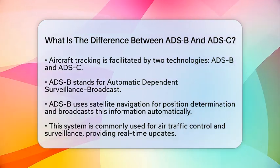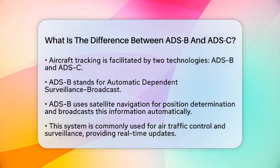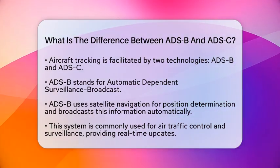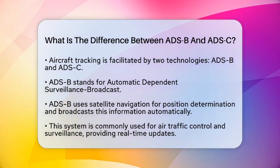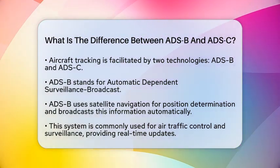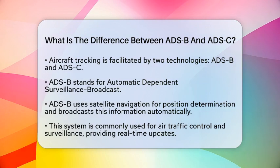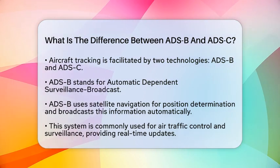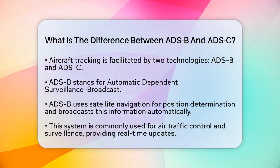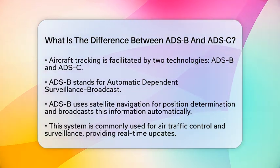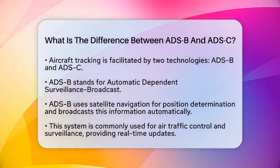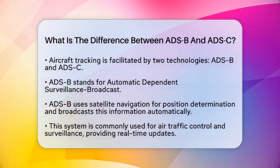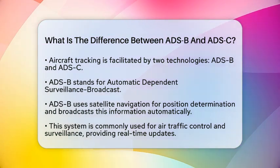Automatic Dependent Surveillance Broadcast is a system where an aircraft uses satellite navigation to determine its position. It then broadcasts this information periodically. This process is automatic and does not require any external input. Because of this, it is widely used for air traffic control and surveillance. The real-time updates provided by ADS-B allow for precise tracking, which is essential for maintaining safety in busy air spaces.